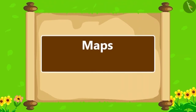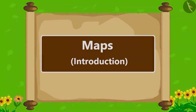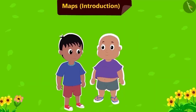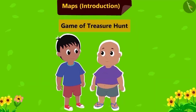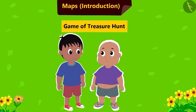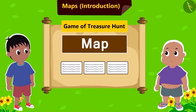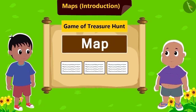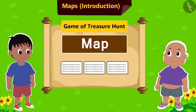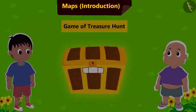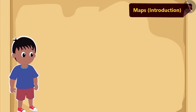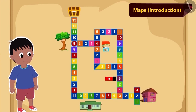In this lesson, we will learn about maps. Raju and Bablu are playing the game of treasure hunt. Raju has given Bablu a map and a few written instructions. Bablu will have to find the treasure following the given instructions. The map made by Raju looks something like this.